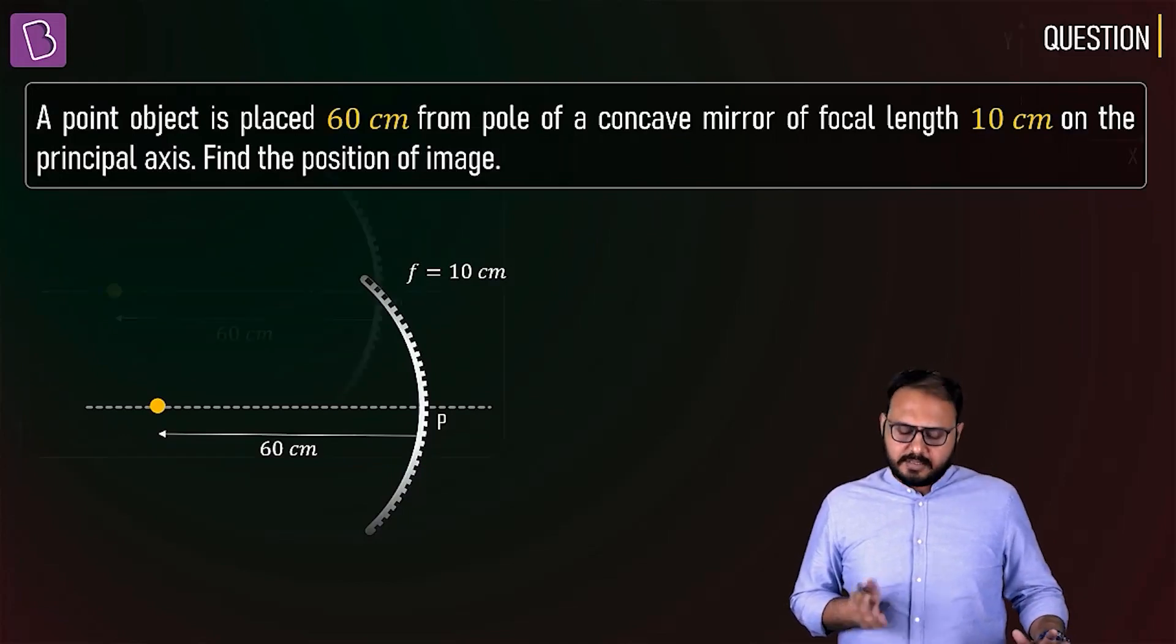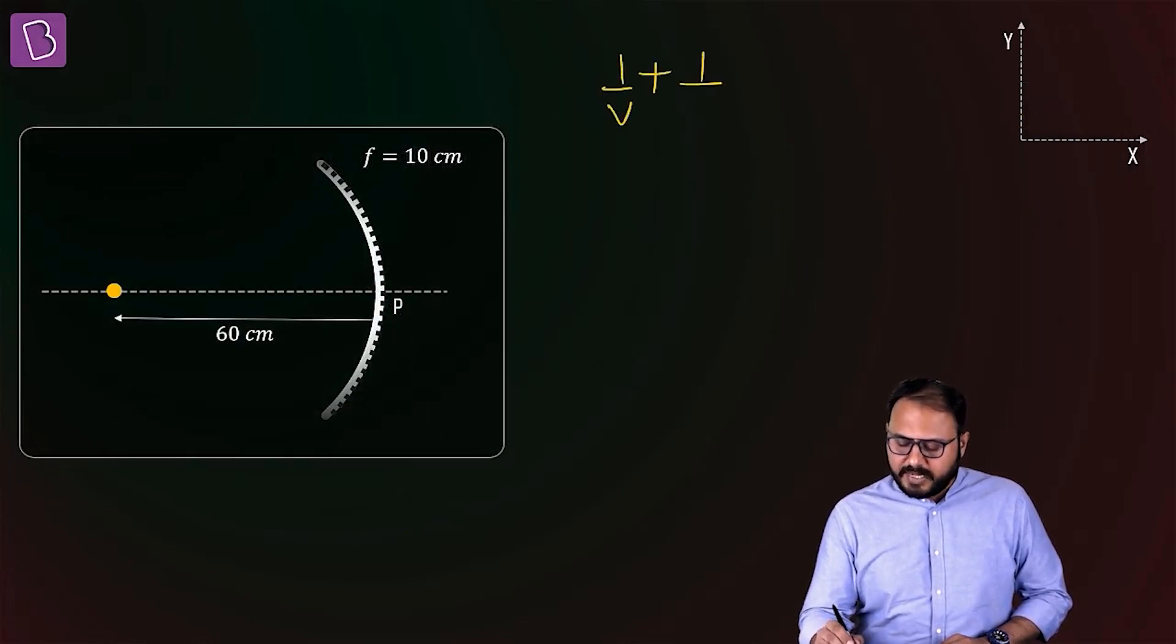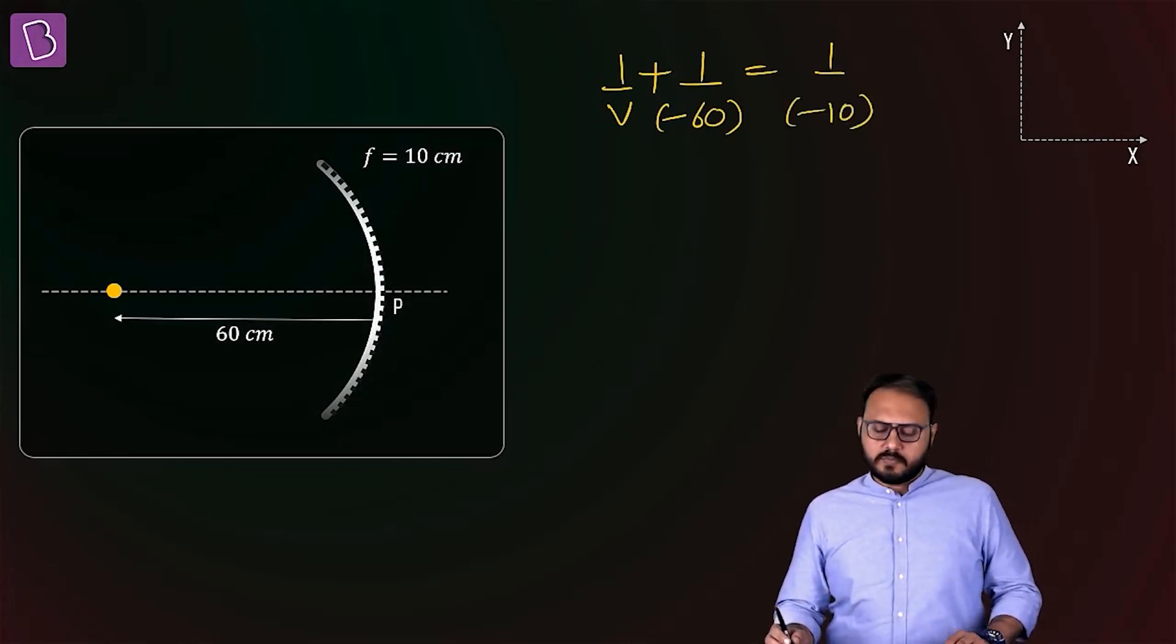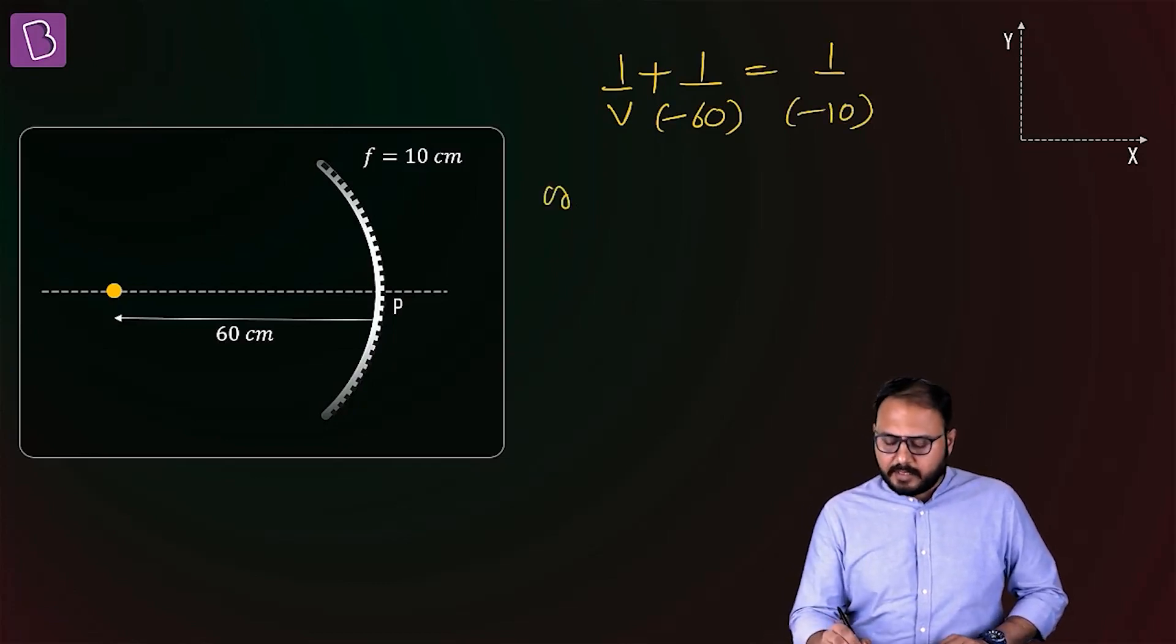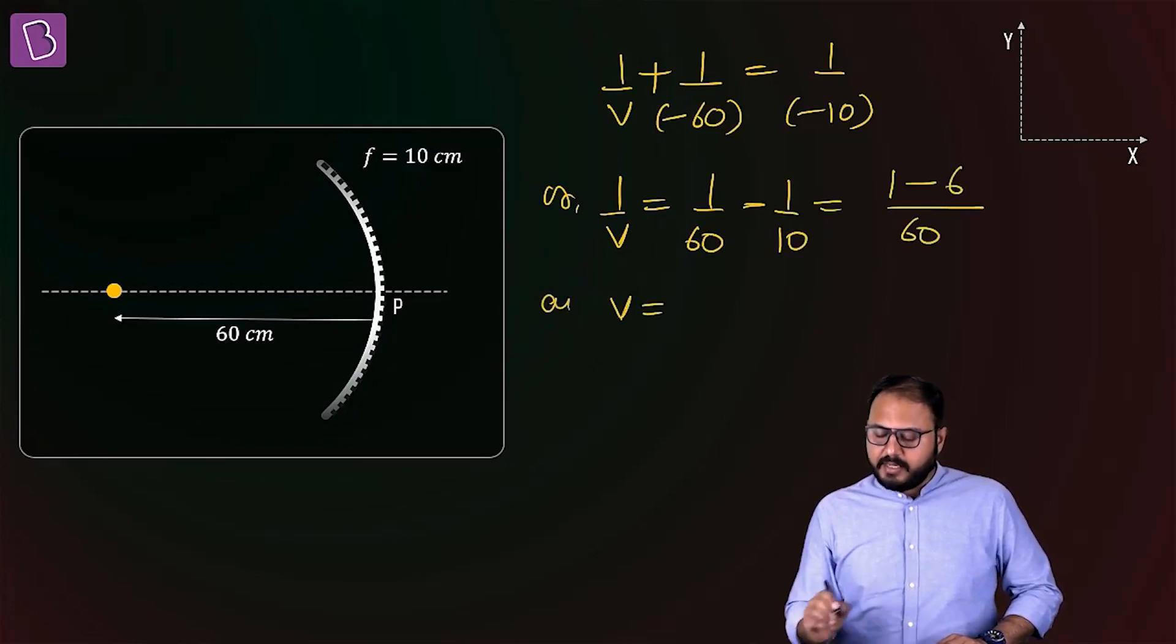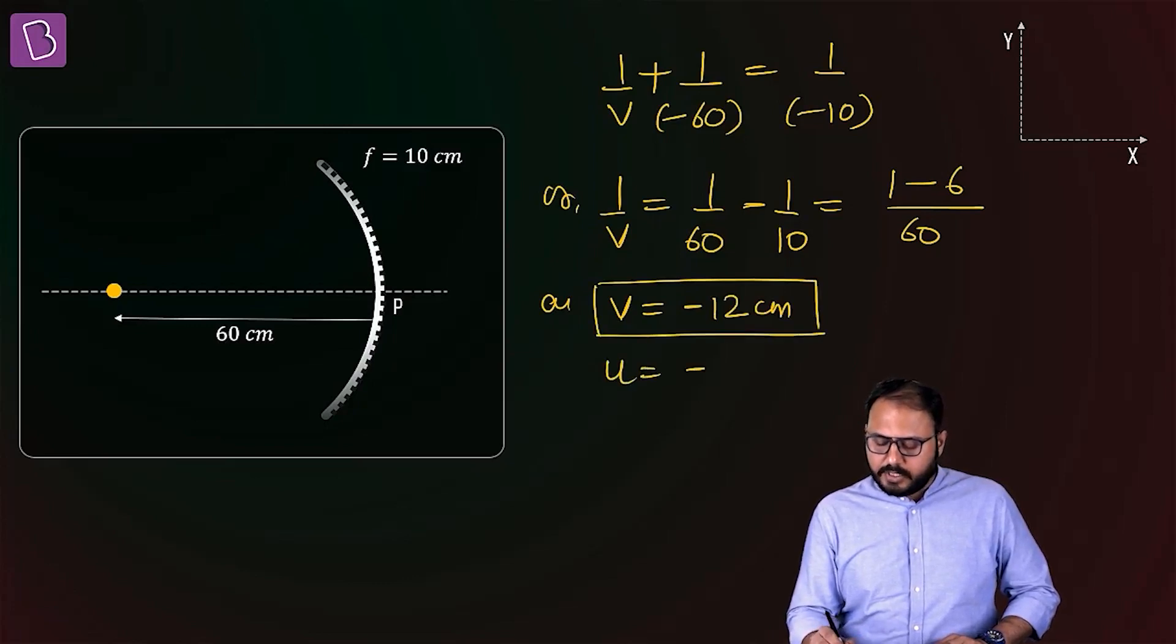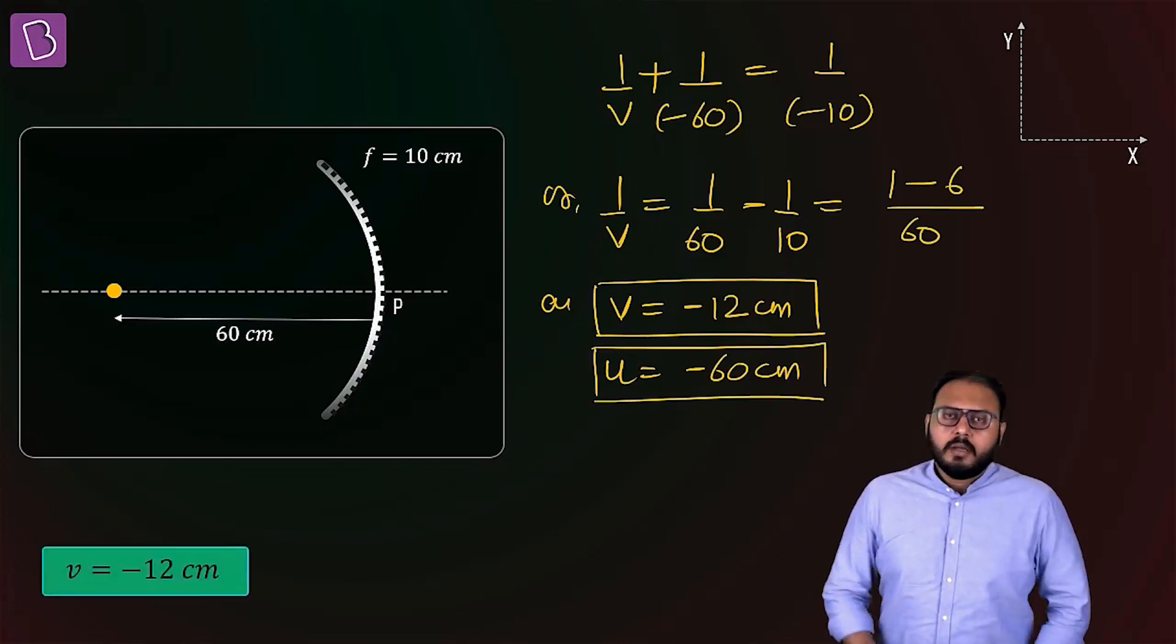One by v plus one by u equals one by f. u is minus 60, f is minus 10. So one by v is one by 60 minus one by 10, which equals minus 5 by 60. Therefore v equals minus 12 centimeters, and u equals minus 60 centimeters.